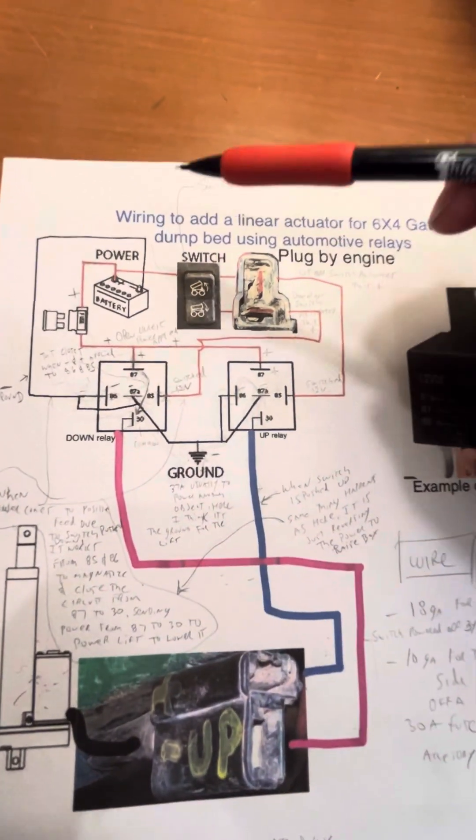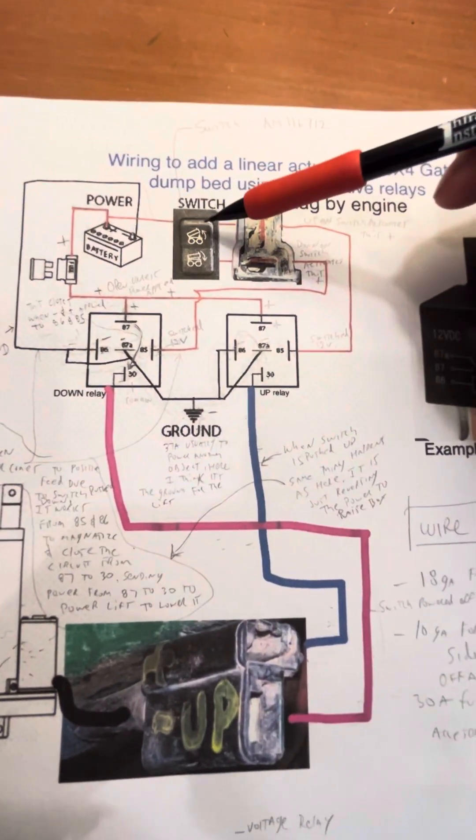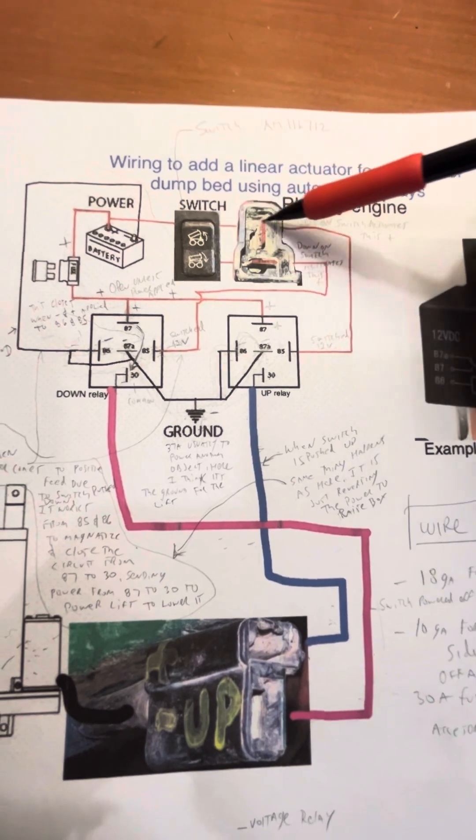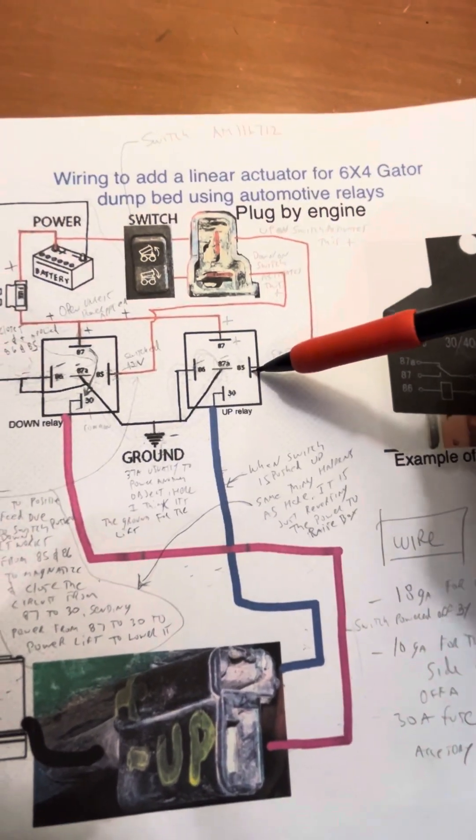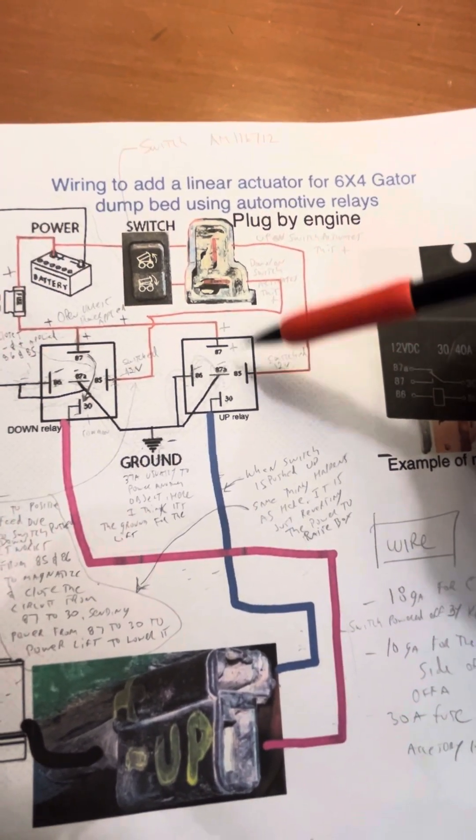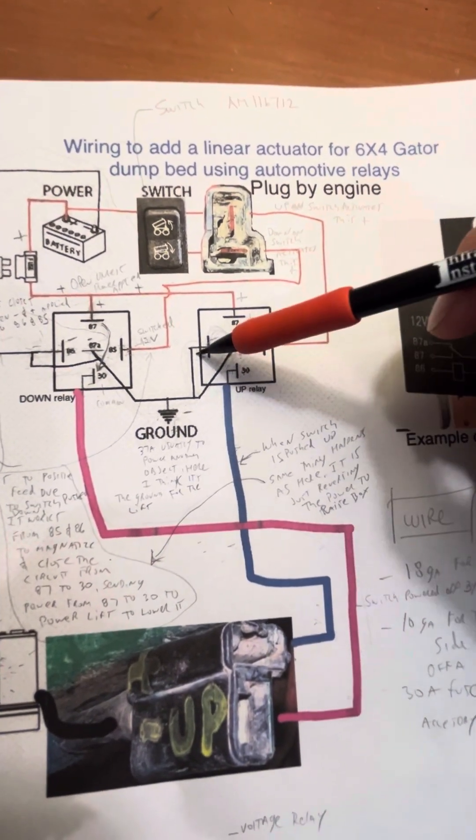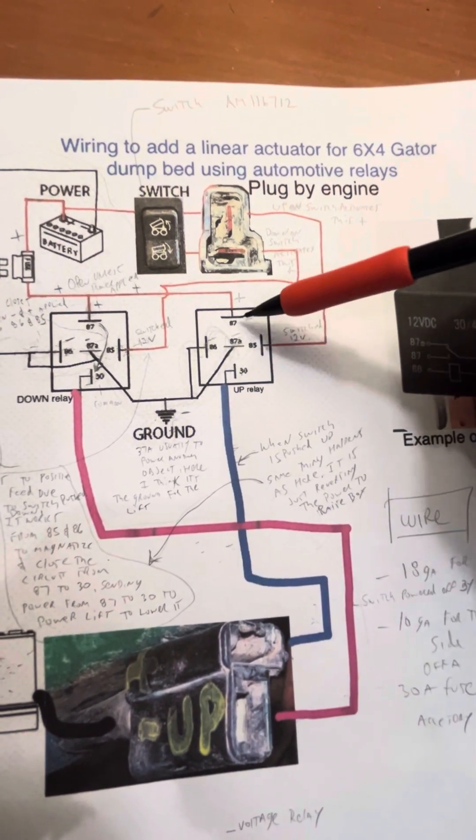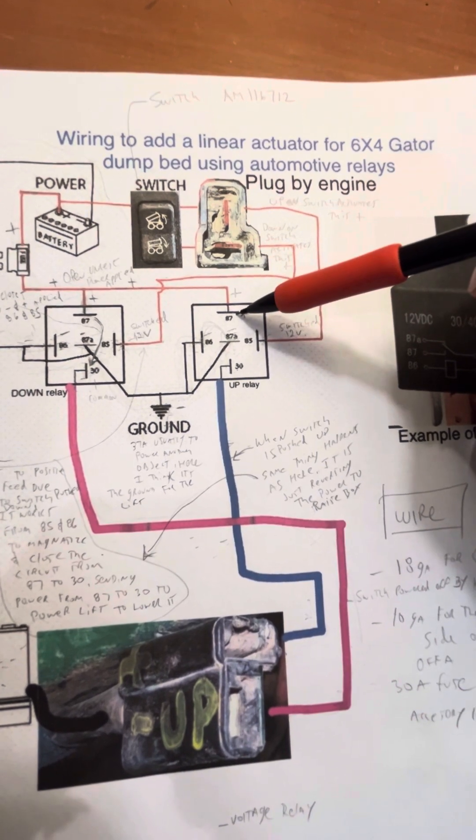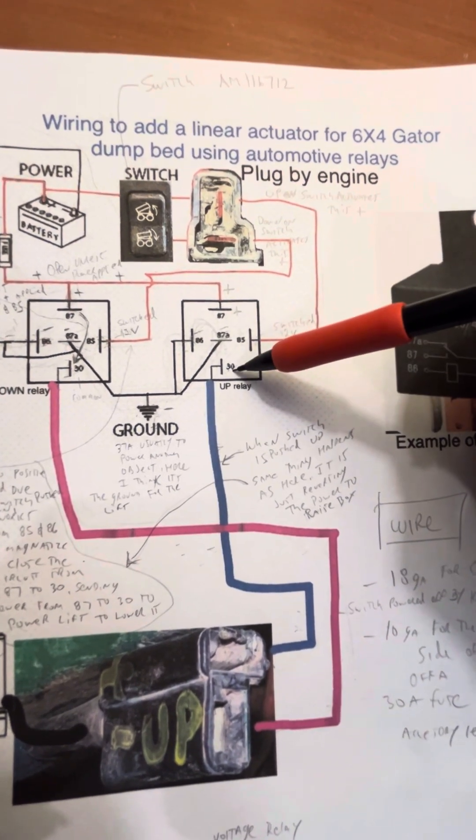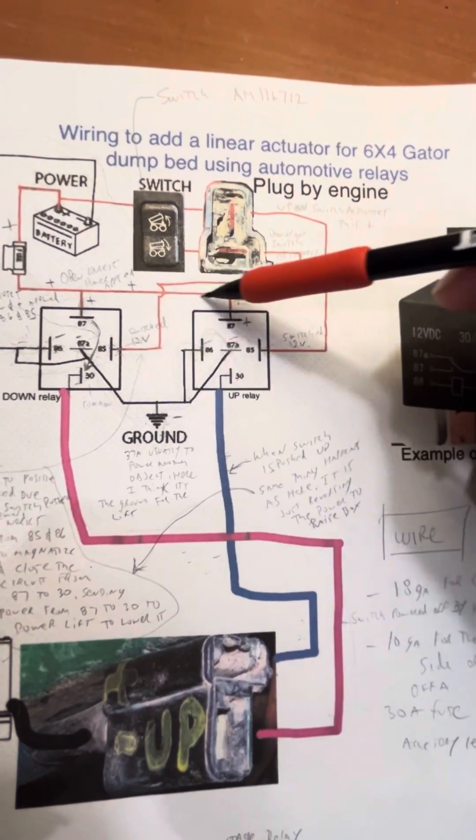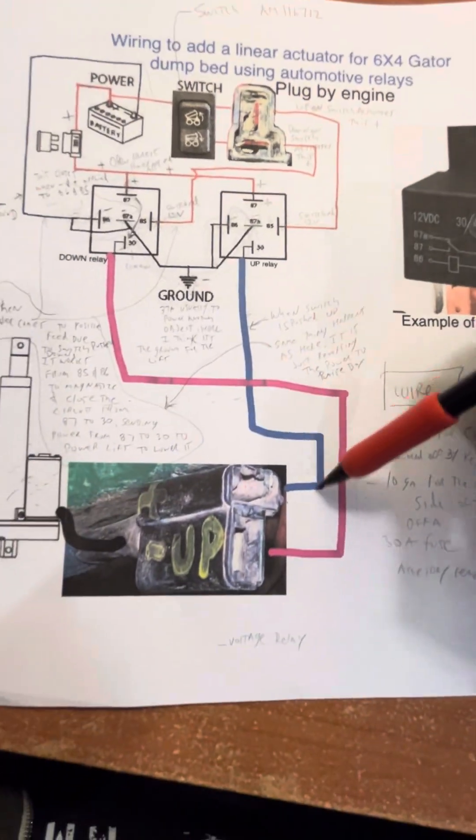So on the opposite note, when we press up, the power comes through here, connects to here. That positive and that negative now connect, which magnetizes the 87 to the 30. And now this power shoots down and goes to the motor again.